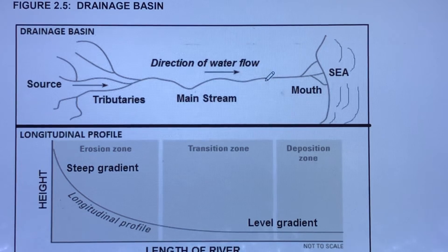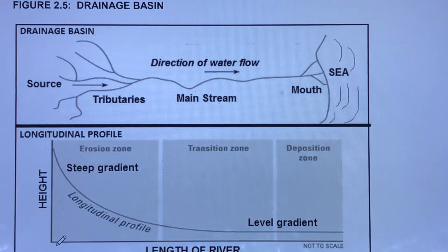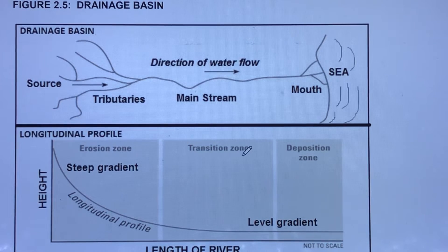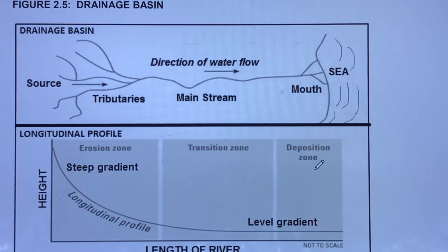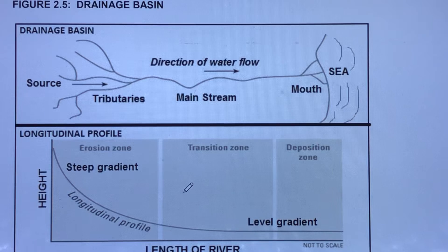Assume that you have the upper course, middle course, and lower course, with the mouth down there. The longitudinal profile shows the height above sea level and the length of the river until the mouth. There is an erosion zone, a transition zone where transportation and some erosion occur, and deposition in the lower course. It's very important to notice the shape of the longitudinal profile shown.